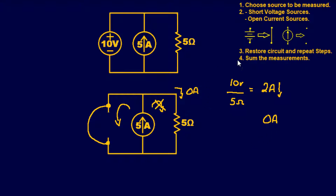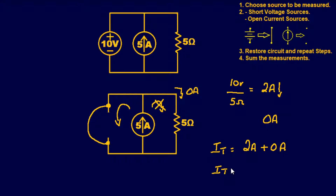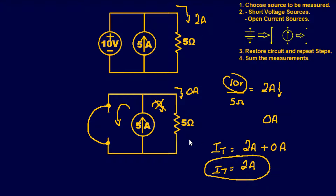Step four: sum all the measurements. I total equals 2 amps plus 0 amps, giving us a grand total of 2 amps. That's our final answer for the current flowing through the 5-ohm resistor.